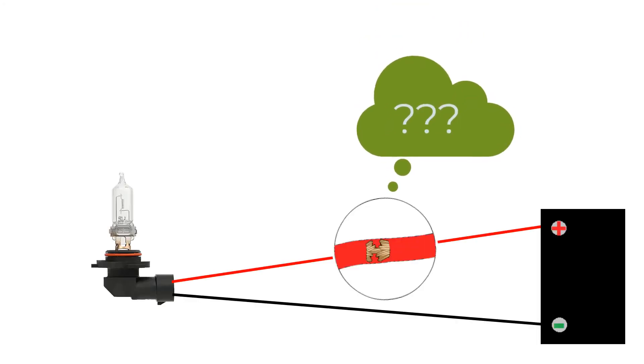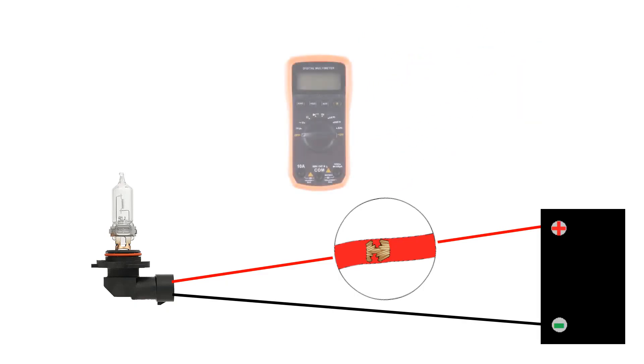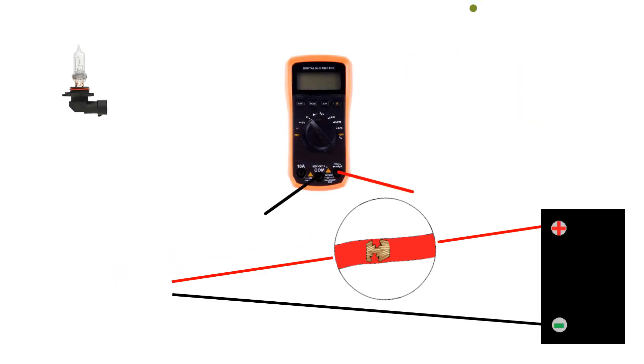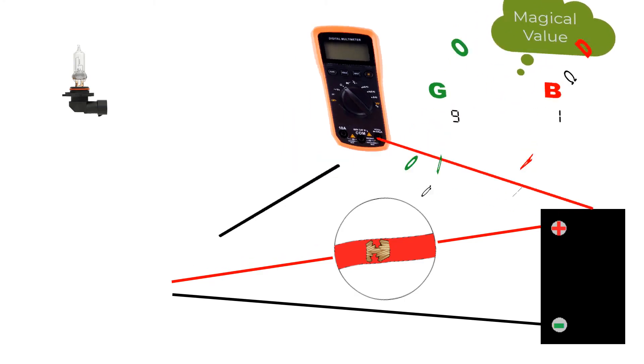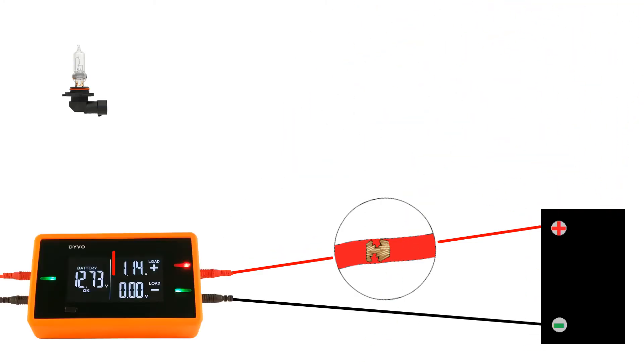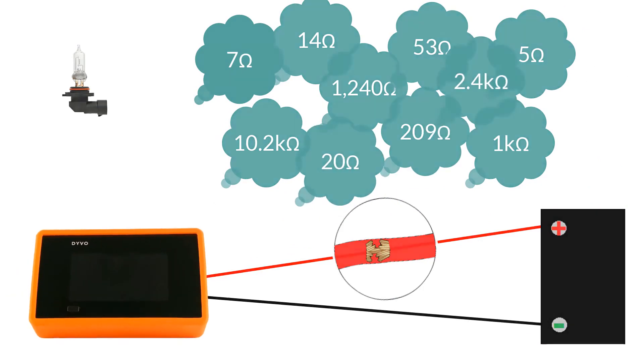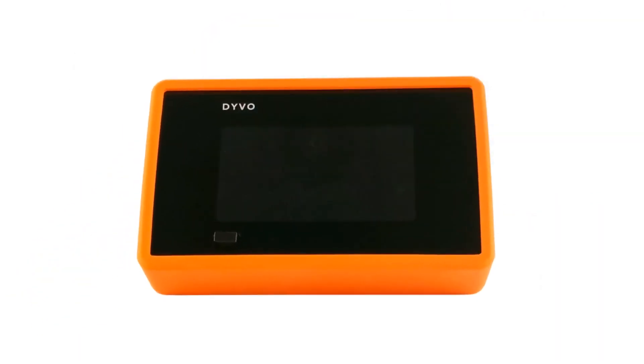For some reason, the automotive field is fixated on finding the exact resistance value in a circuit as if there's a magical cutoff value between good and bad. Unfortunately, there is no magical number, and that's not how resistance values work. Using DEVO, in seconds we can see a red LED and only 1.14 volts on the positive circuit. We know we have a resistance problem, and the exact resistance value doesn't matter. It's that easy, and now you know how to identify resistance problems using DEVO.